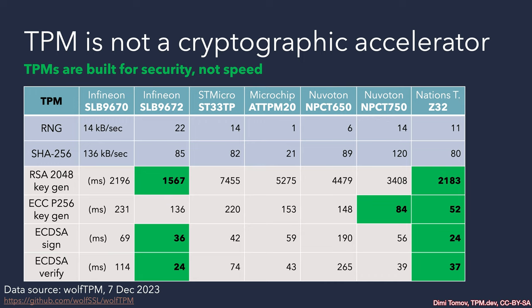In the table, green highlights the best performance among the listed TPMs, selecting the top two in each category. It is also important to note when these models came to market. For example, at the beginning of the table we have the Infineon SLB 9670 and the newer model 9672. The old model came around 2015-2016, and the new model came at the end of 2021, with mass availability in 2022.